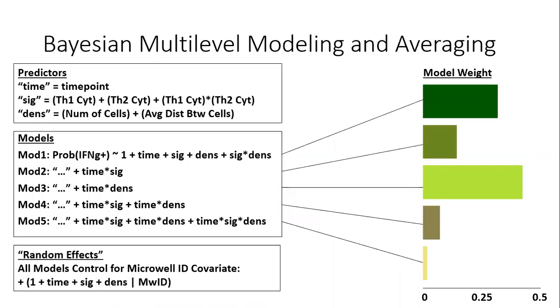Having assembled thousands of time courses of these variables, I used Bayesian multilevel modeling to ask how they drove Th1 differentiation, paying special attention to the interaction between cytokine signaling and cell density, since this should be most indicative of quorum sensing.